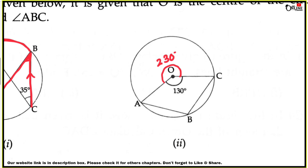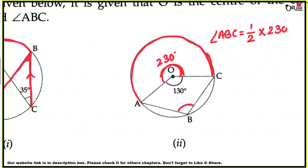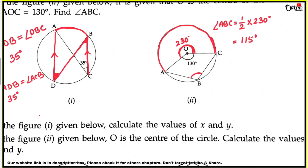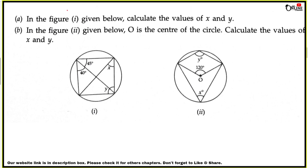Taking AC as the arc, the central angle is 230 degrees. By theorem number 1, angle ABC equals half of the central angle: half of 230 degrees equals 115 degrees. So angle ABC equals 115 degrees.